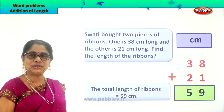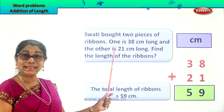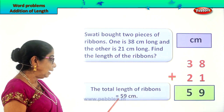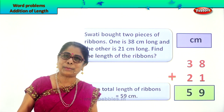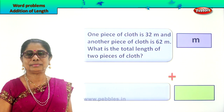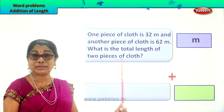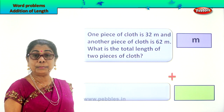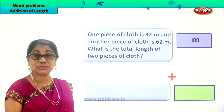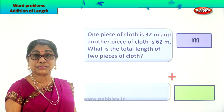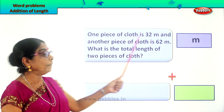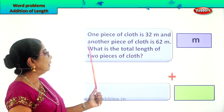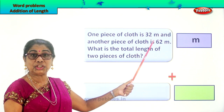Did you enjoy the word problem in length? So Swathi has got two bits of ribbon and the total is 59 centimeters. Let's look at another problem. Read together.